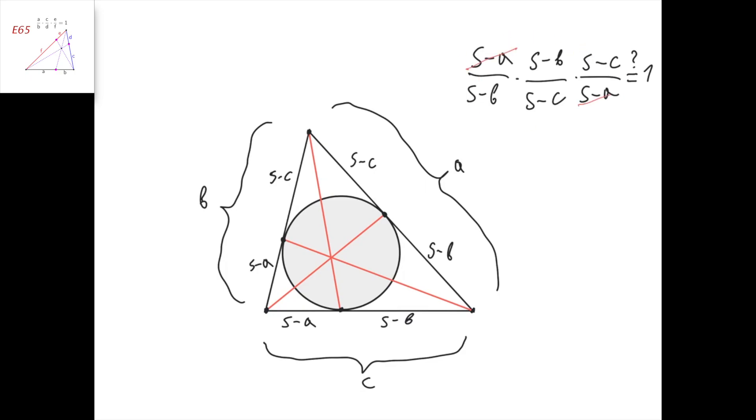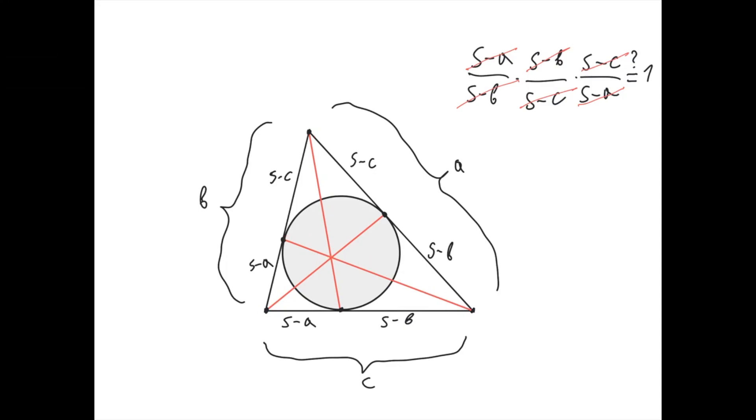But you can see that in this expression, S minus A cancels with S minus A, S minus C cancels with S minus C, and S minus B cancels with S minus B. And so, the whole expression equals 1. Therefore, these three lines always intersect at one point. This point is called the Gergonne point for the triangle.